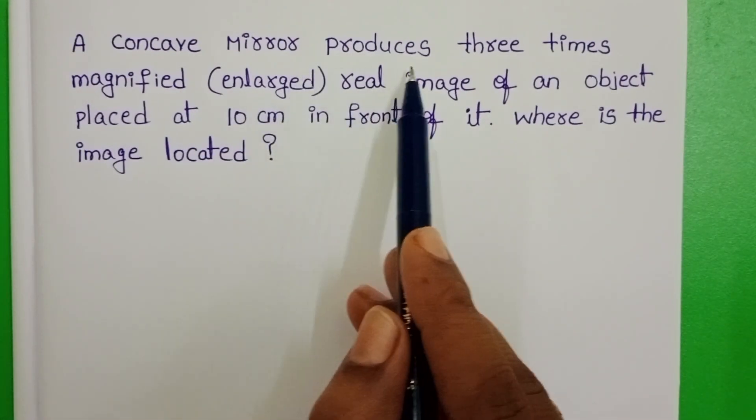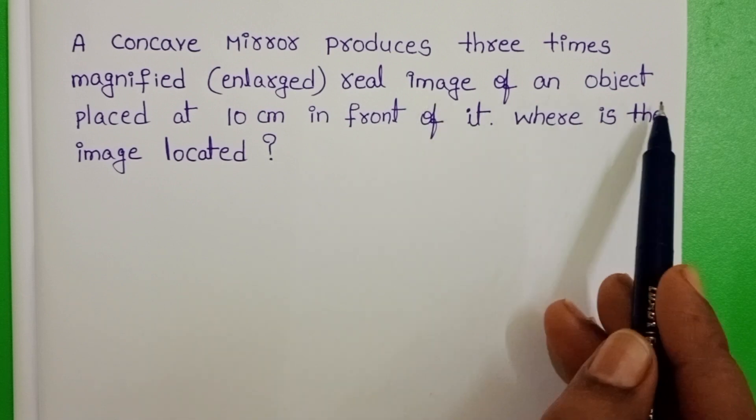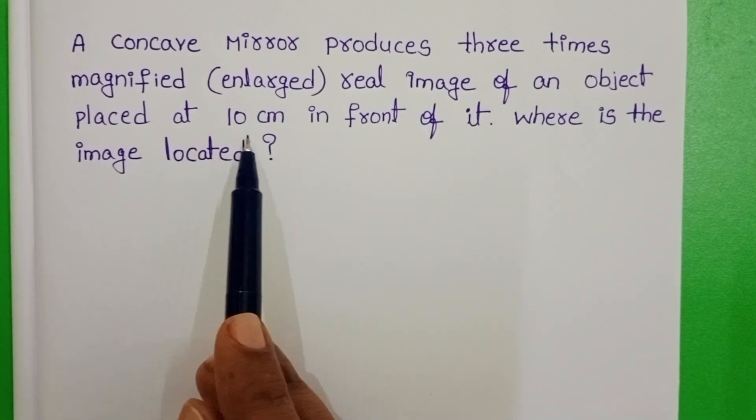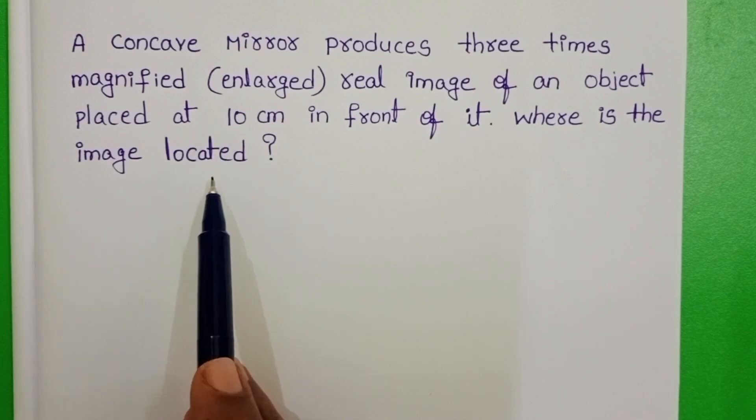A concave mirror produces 3 times magnified real image of an object placed at 10 cm in front of it. Where is the image located?